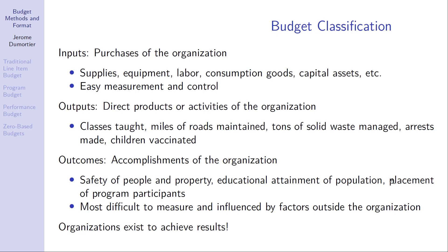Or you can center your budget around outcomes — basically the accomplishments of the organization. For example, from a police department, arrests made would be an output, but what you really want to accomplish is the safety of people and property. Similarly, for an educational institution like a public school, the educational attainment of the population would be an outcome. Organizations exist to achieve results.